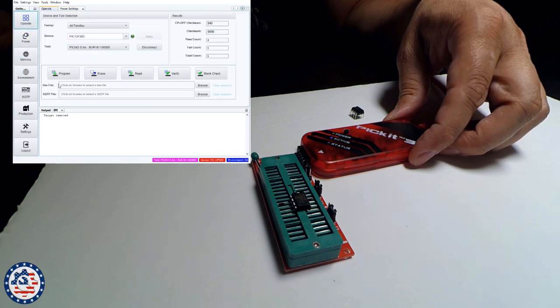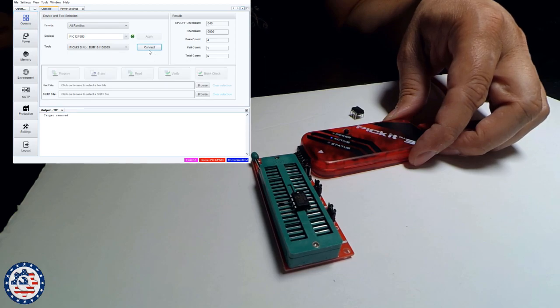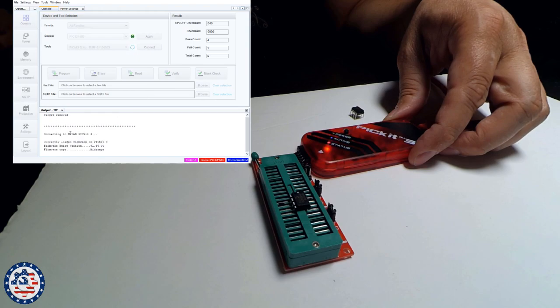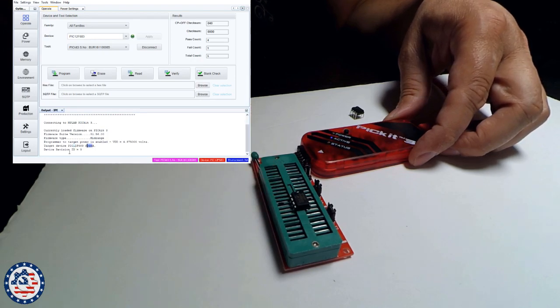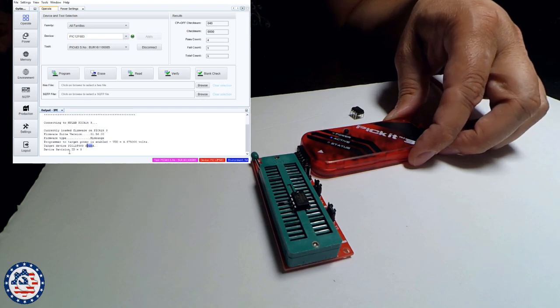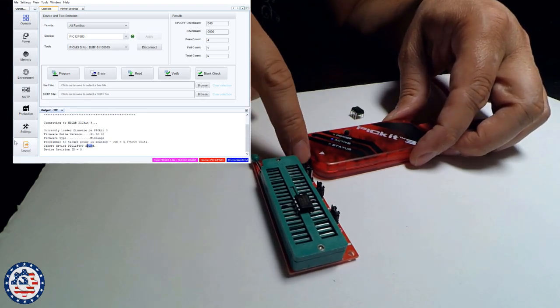I'm going to go back to operate. I'm going to disconnect. And then I'm going to connect again. Going and reading. And it says device revision said target device, PIC 12F683 found. So it recognized the chip. All I had to do was make sure that I'm supplying power through the tool itself.